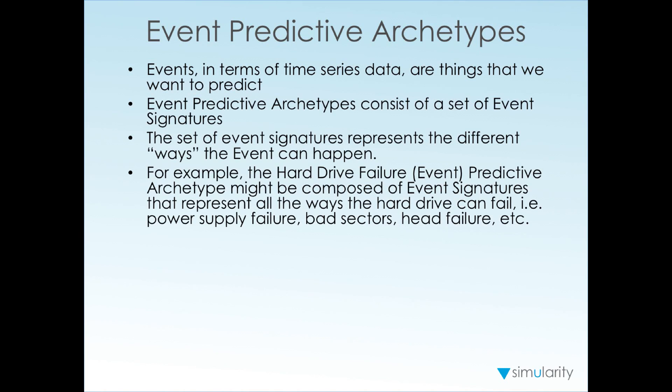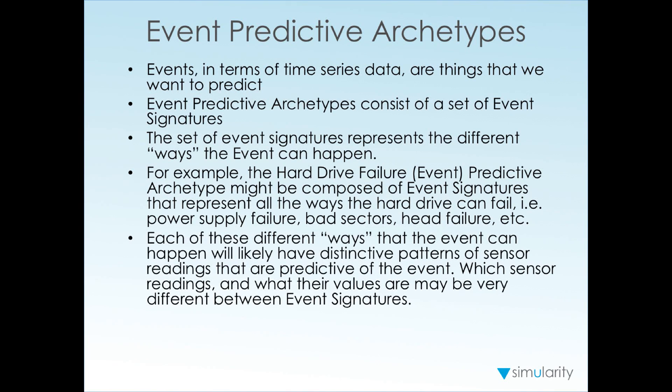One can imagine that the sensor signatures are going to be different for each of these different types of failures, but you'd like to be able to predict all of them accurately. Each of these different ways that the event can happen will have a distinctive pattern of sensor readings that are predictive of the event. Which sensor readings are predictive and what their values are may be very different between event signatures, such as those for a power supply failure versus those for a head failure.